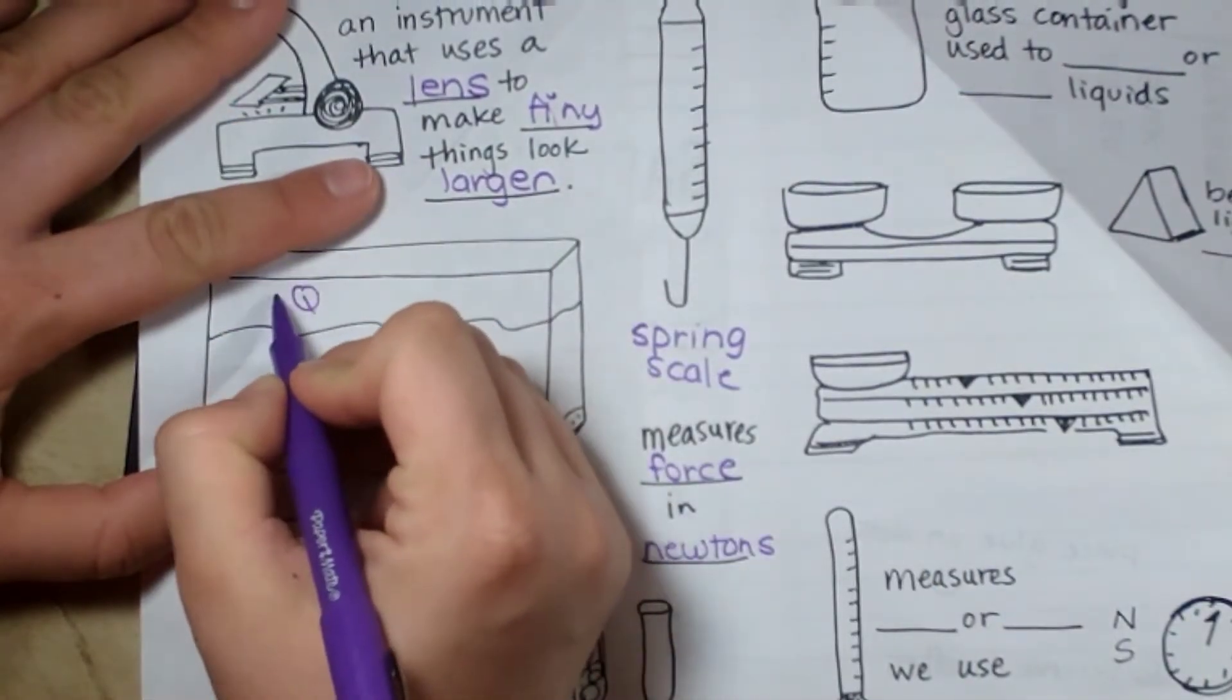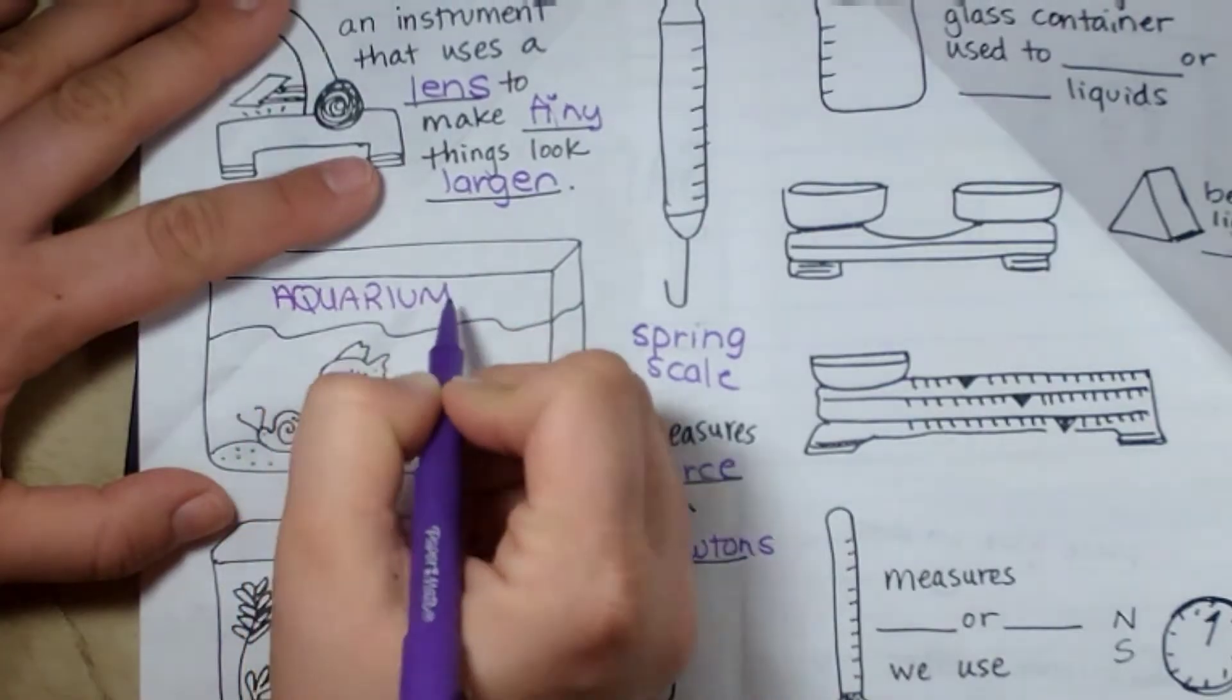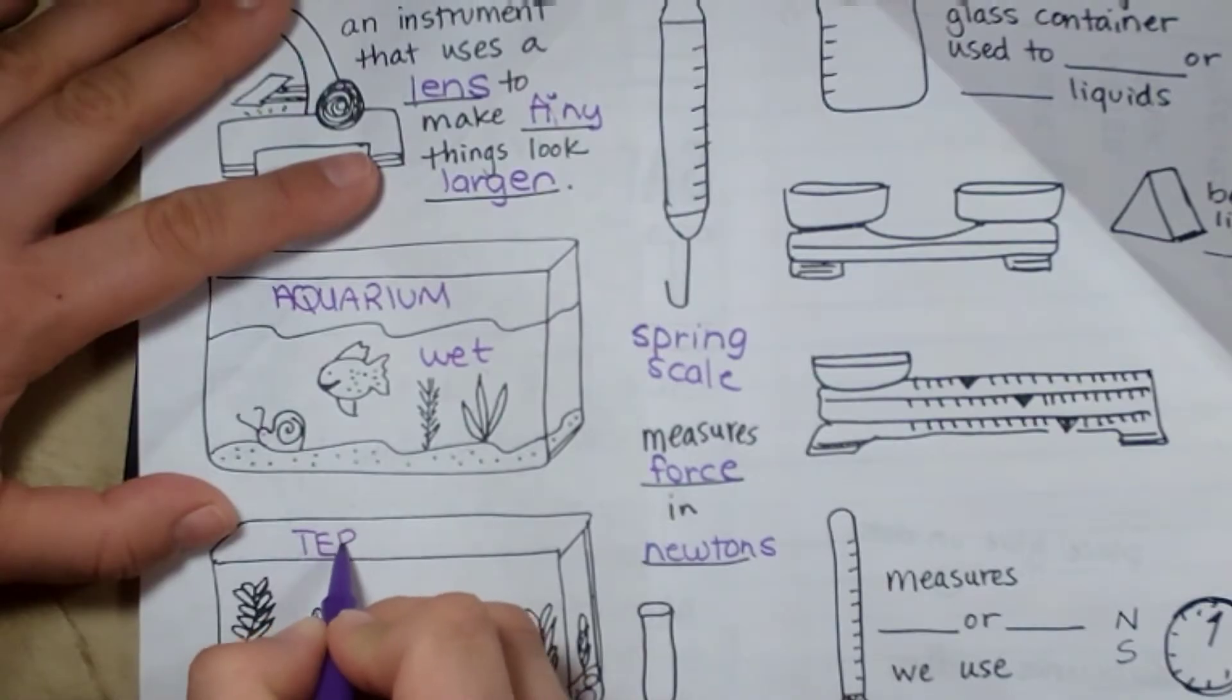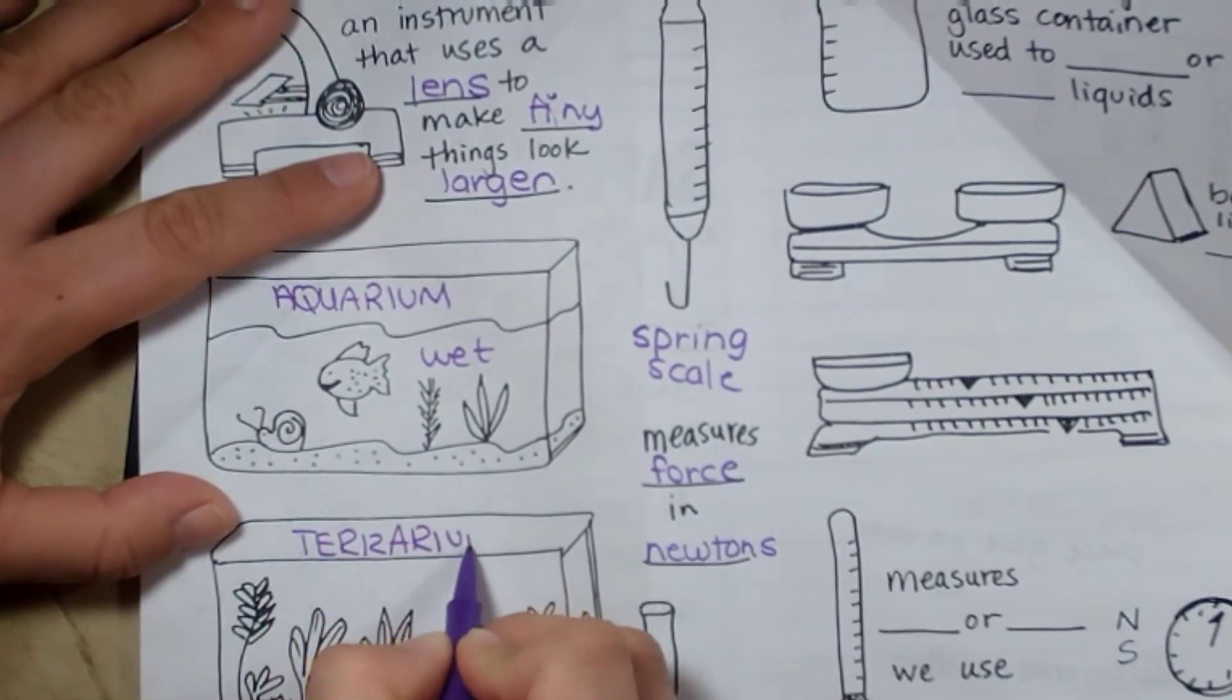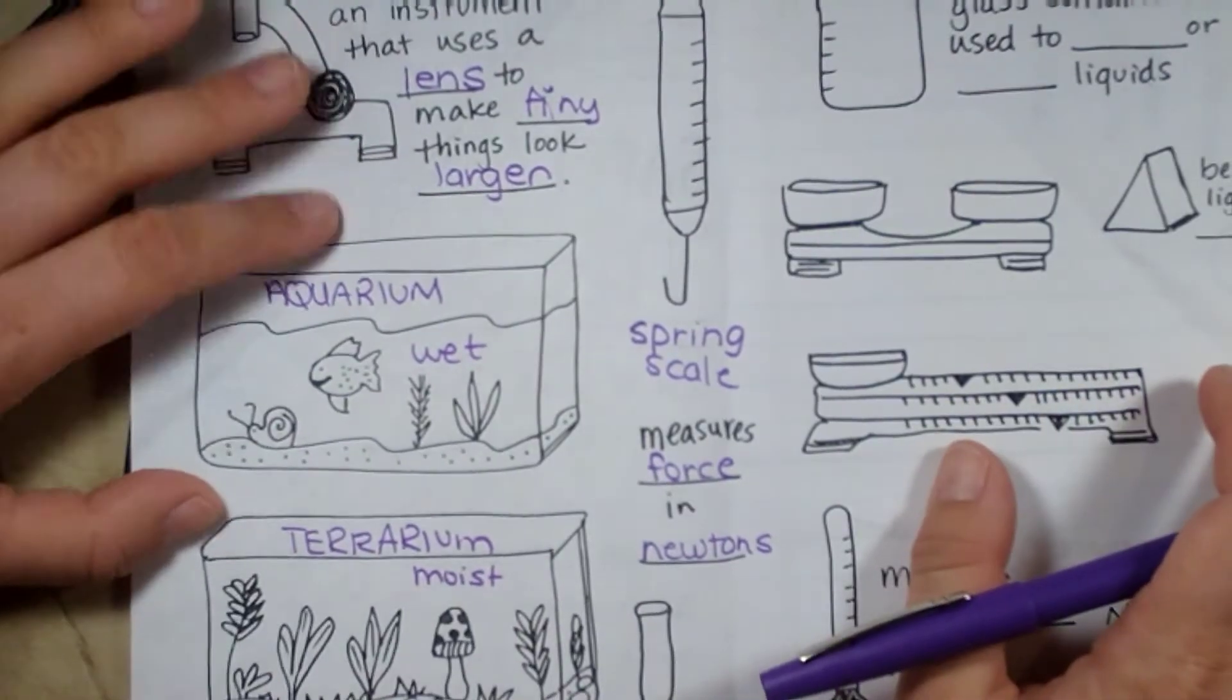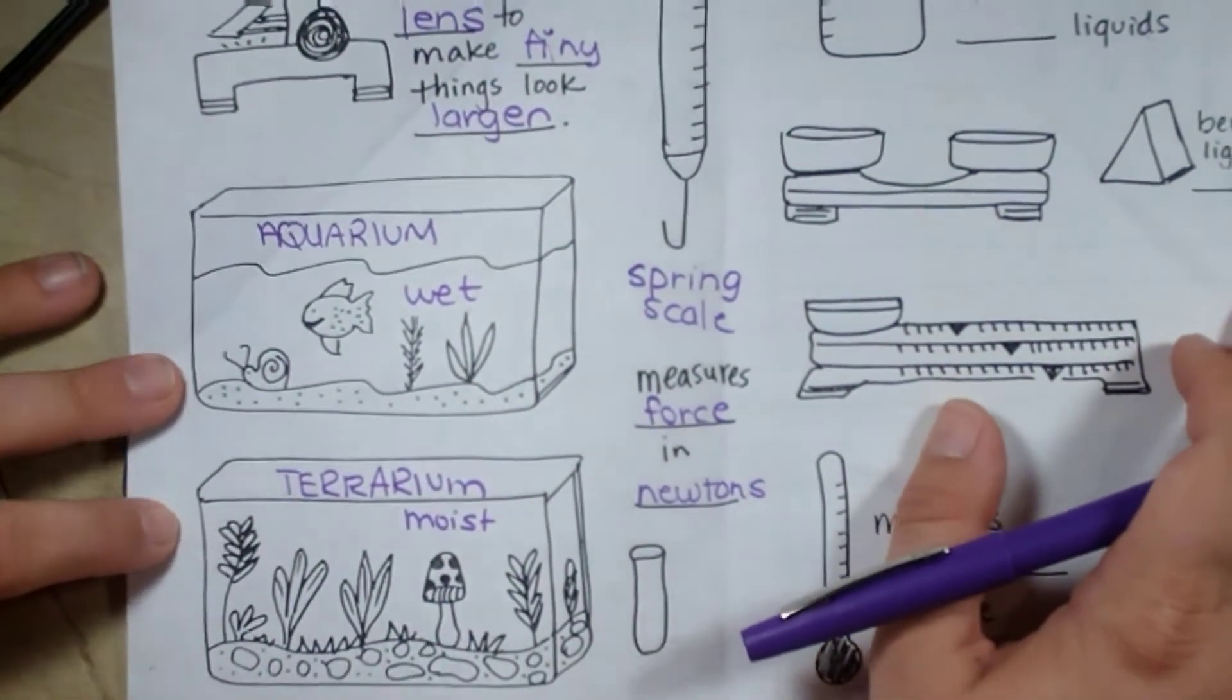Here we have an aquarium. It is wet, full of water. And then sometimes scientists have a terrarium, which is a moist environment, but not wet. They use that sometimes to put some live animals in there to observe them.